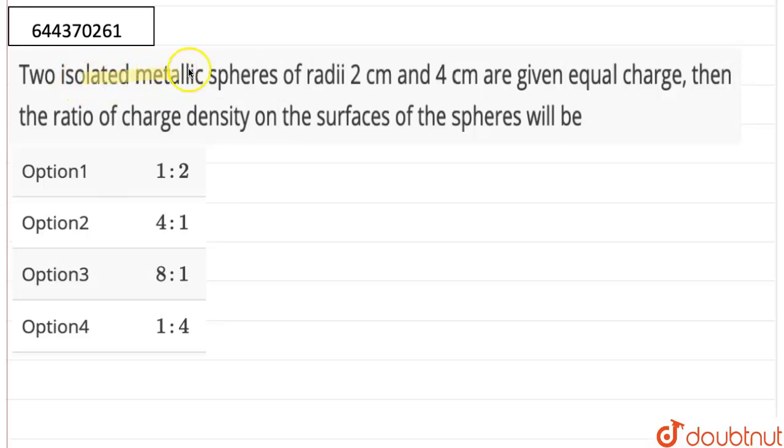So the question here is two isolated metallic spheres of radii 2 centimeter and 4 centimeter are given equal charge, then the ratio of the charge density on the surfaces of the spheres will be 1:2, 4:1, 8:1, or 1:4. So we have